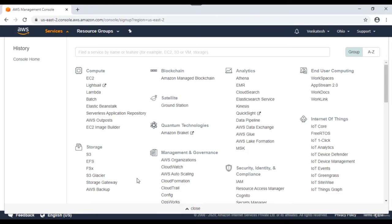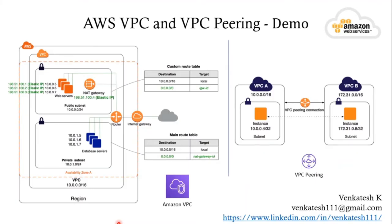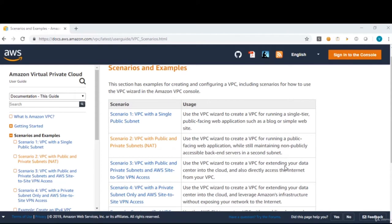Hello everyone, my name is Venkatesh. In this course we are going to look at a demonstration of AWS Virtual Private Cloud, or AWS VPC, which can be set up for a multi-tier website with web servers in a public subnet and database servers in a private subnet. In the second demo, we'll look at VPC peering and how to peer two VPCs within the same region.